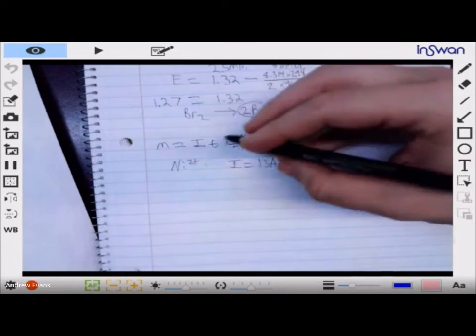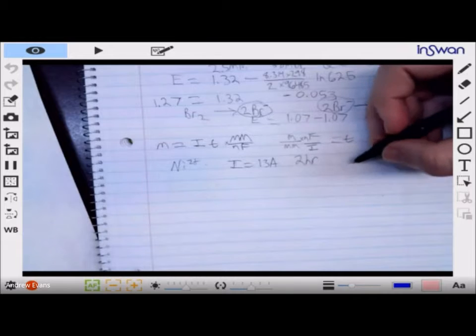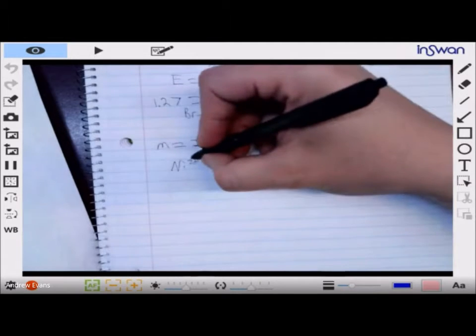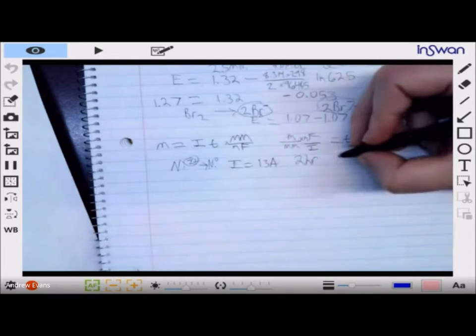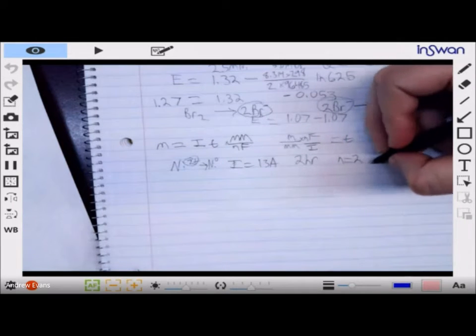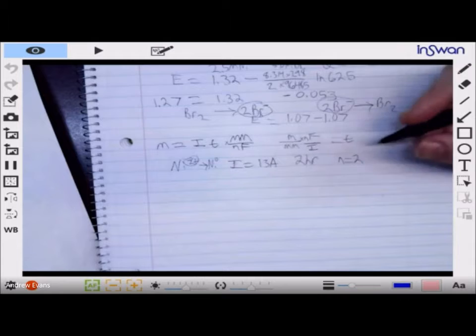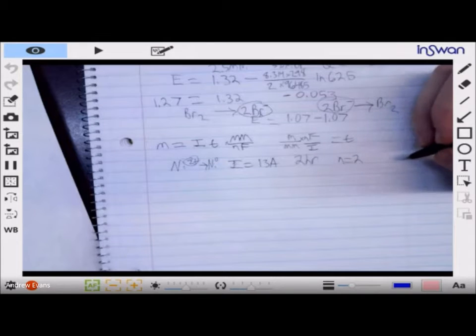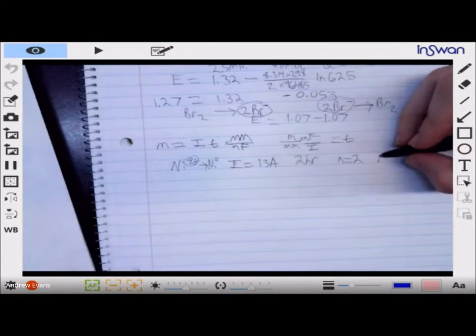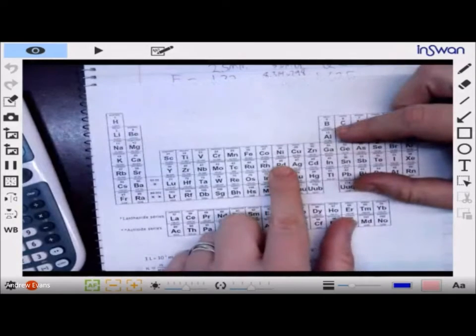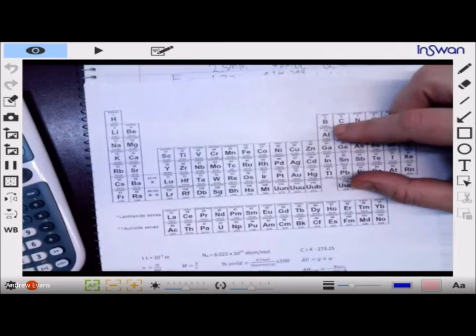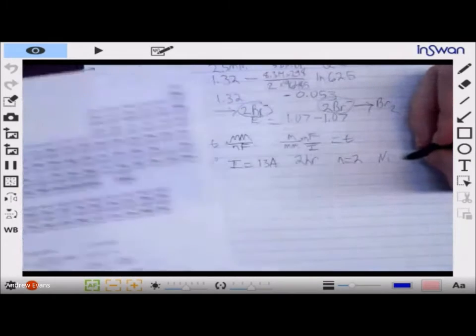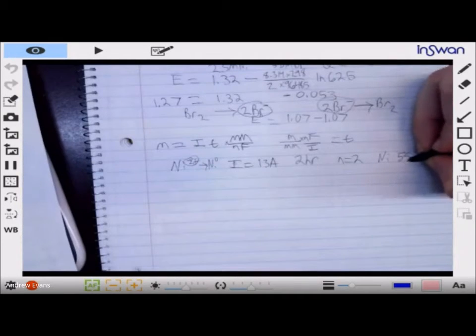I need to know what is the n and what is our molar mass. Well, the n is we're going from 2 plus to 0. So, n is going to be 2. And molar mass, we can simply find from the periodic table. Nickel is, look here, 58 point, I think that's 693, I'm going to say 58.7.